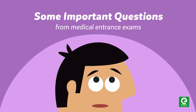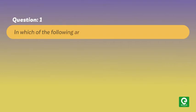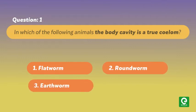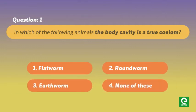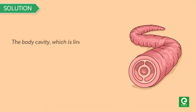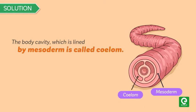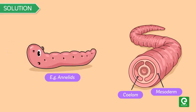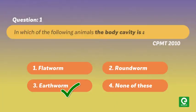Let's go through some important questions from medical exams. Question 1: In which of the following animals is the body cavity a true coelom? (1) flatworm, (2) roundworm, (3) earthworm, (4) none of these — CPMT 2010. Solution: The body cavity lined by mesoderm is called coelom. Earthworm (annelid) possesses a true coelom. Hence option 3 is correct.